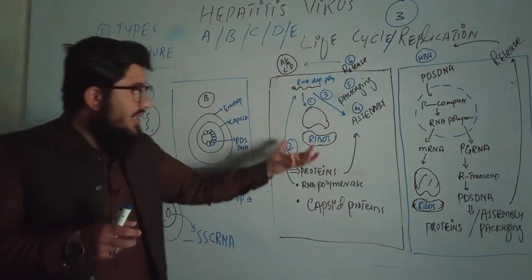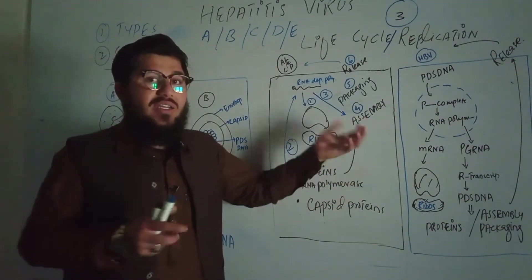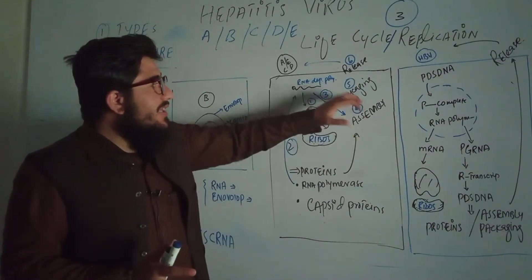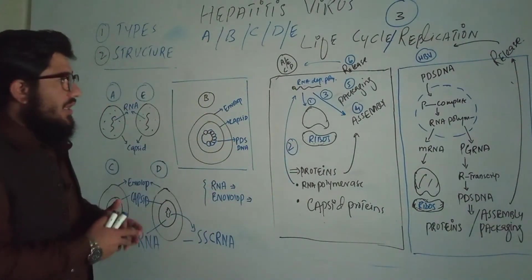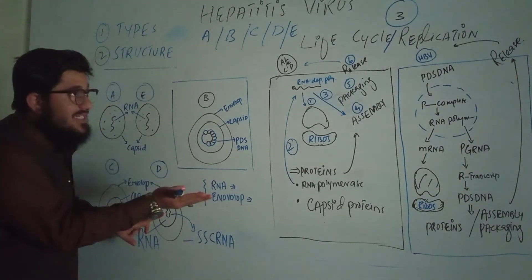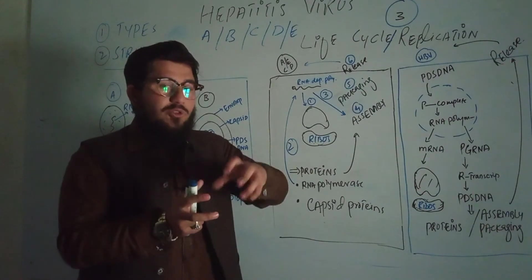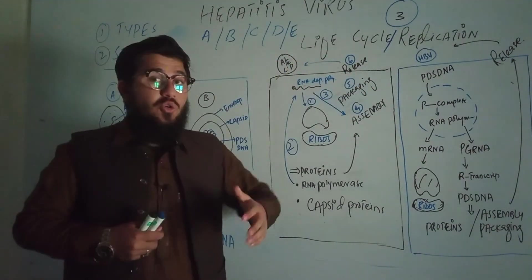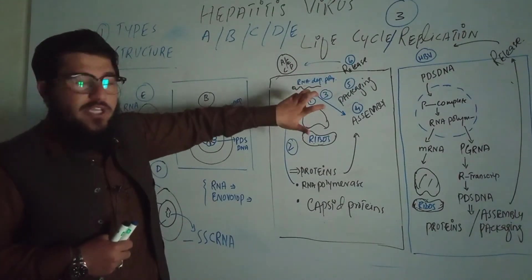All these proteins are synthesized by the ribosomes after translation. Then assembly begins: RNA polymerase, capsid proteins, and all other proteins come together. After assembly comes packaging — whatever is needed for each virus is packed in. As the viruses are released they acquire an envelope. Each virus gets its nucleic acid, capsid, and envelope. They are then released, free to find another hepatocyte and infect it. This cycle of infecting and releasing is the life cycle of RNA viruses A, E, C, and D.